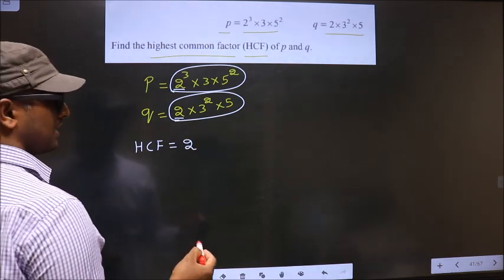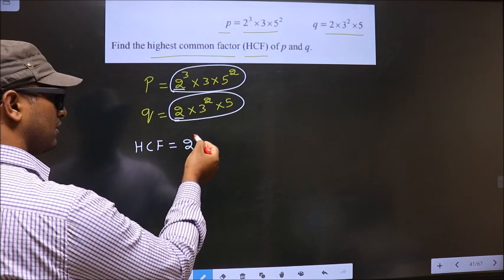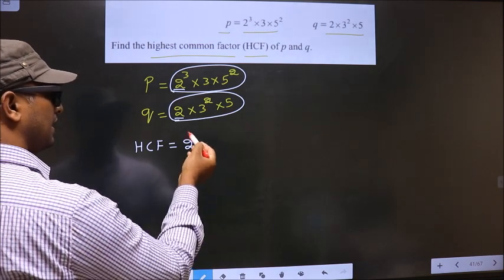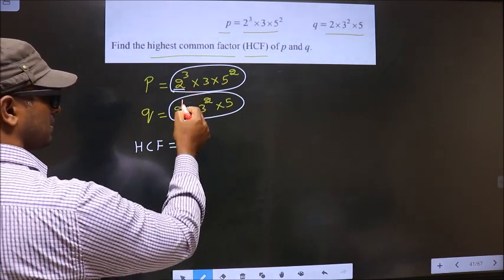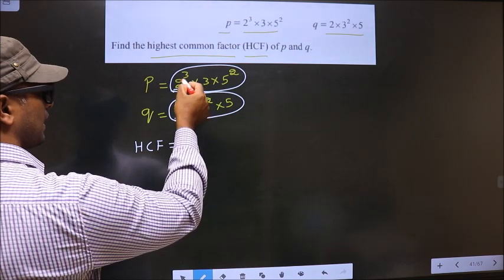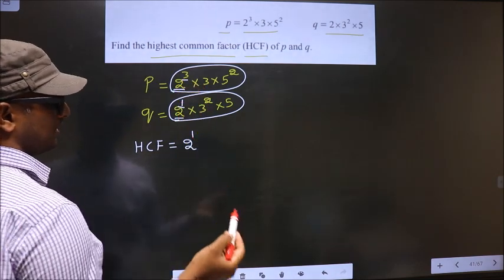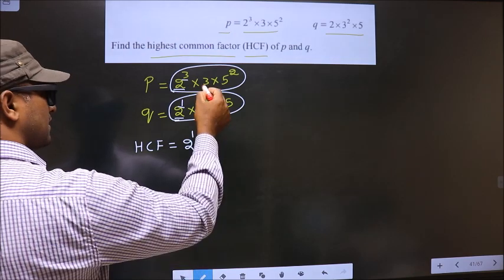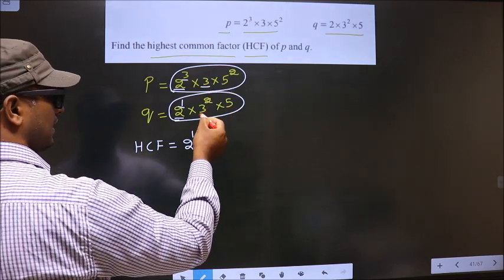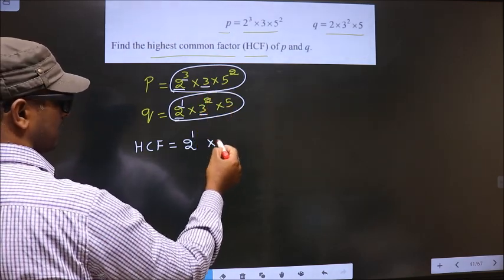Now the question arises, what power will you write on this 2? It will take the smaller of both powers. So smaller of 1 and 3 is 1. So here you will write 1. Now next number is 3. Do we have 3 here? Yes. So here also you write 3.